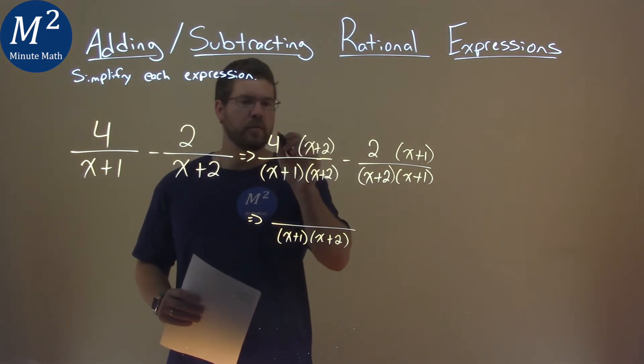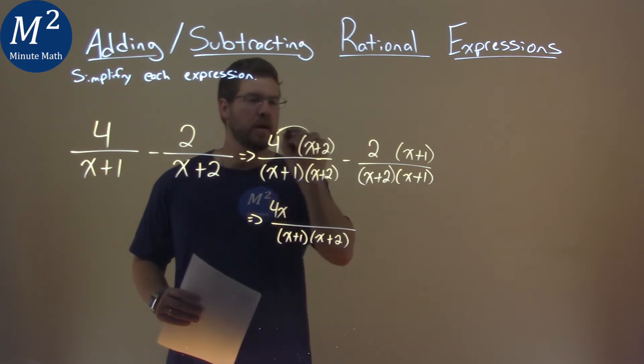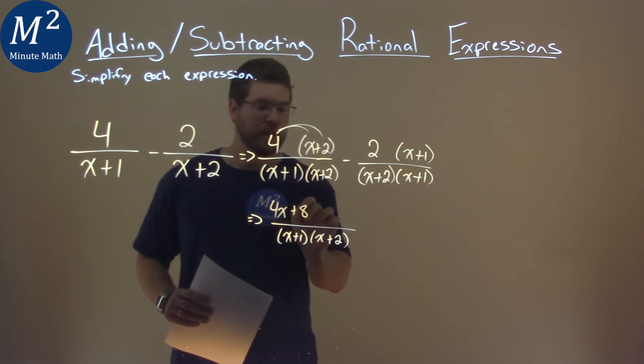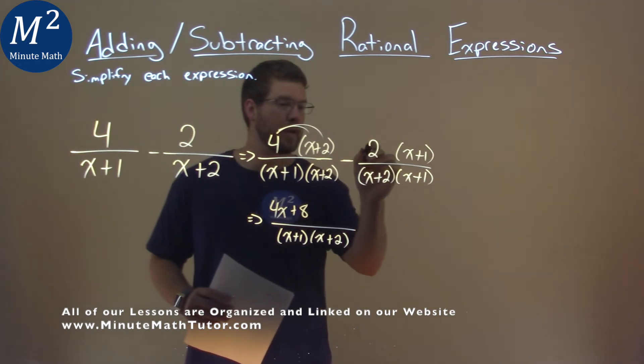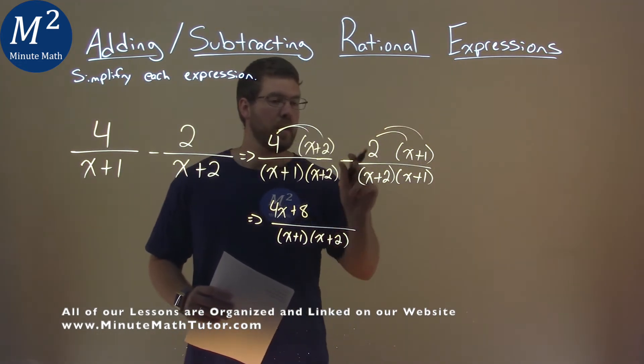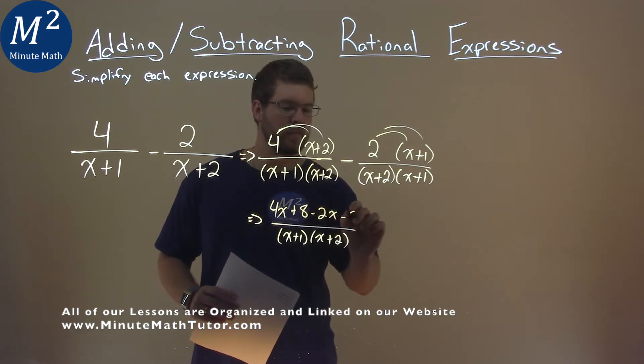So now let's go distribute this, 4 times x is 4x, and 4 times 2 is 8. Remember, this minus sign gets distributed as well. Negative 2 times x is minus 2x. Negative 2 times 1 is minus 2.